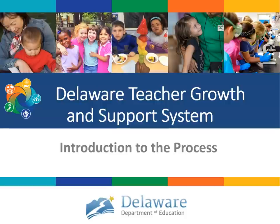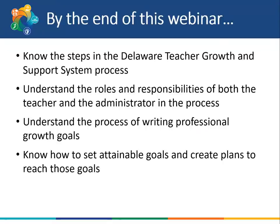This module will provide you an introduction to the observation and evaluation process. By the end of this webinar, you will know the steps in the Delaware Teacher Growth and Support System process, understand the roles and responsibilities of both the teacher and the administrator, understand the process of writing professional growth goals, and know how to set attainable goals and create plans to meet those goals. This session does not cover calibration on the framework or how to use the DSC. Administrators will receive more in-depth training, including calibration, over the course of their training institute. All administrators and teachers will receive resources and supports to use the DSC to implement this process.